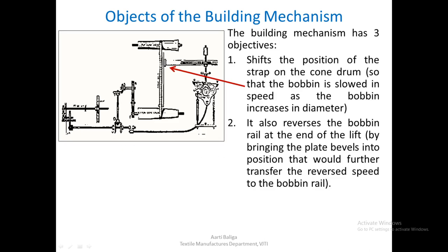This is the building mechanism, and the lower part — this tail-like structure — will alternately bring the plate bevels into position and accordingly reverse the direction of the bobbin rail. So this is the second function that the building mechanism has to perform.